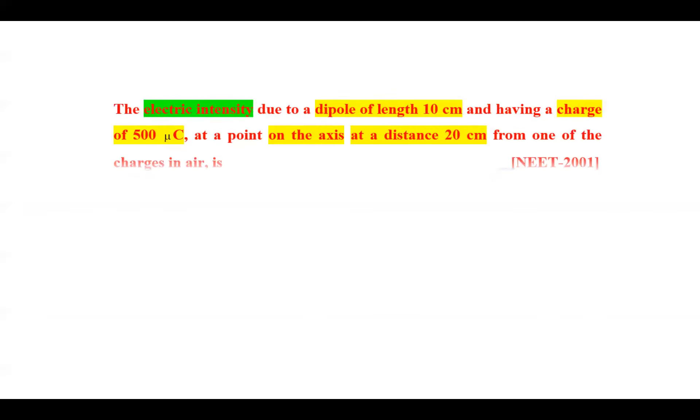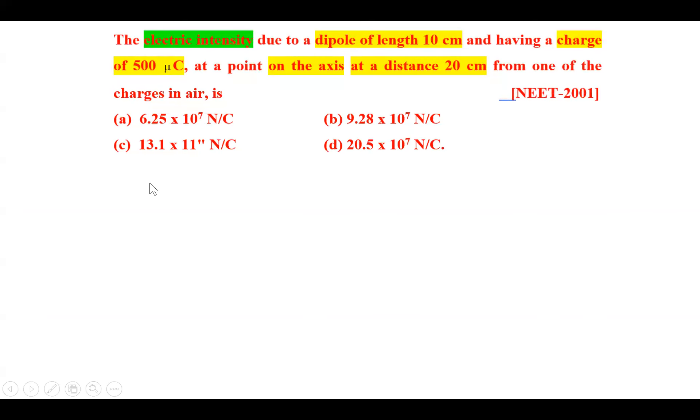Read the question again. The electric intensity that we want to find is for a dipole. The dipole length is 10 cm and charge is 500 micro coulomb. We want to find the electric intensity on the axis of the dipole at a distance 20 cm from one of the charges.